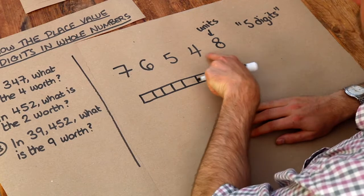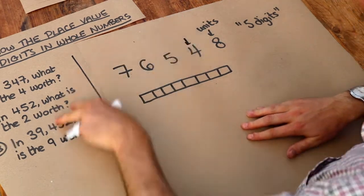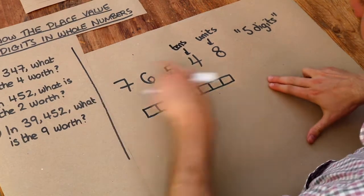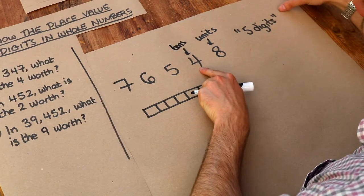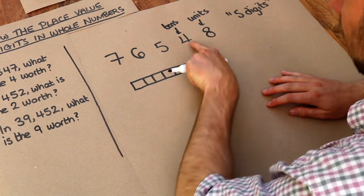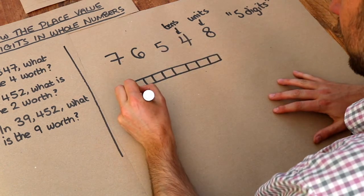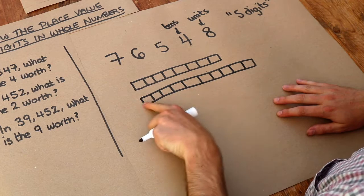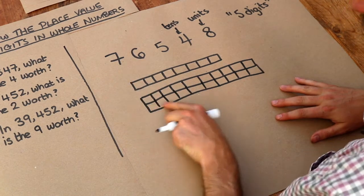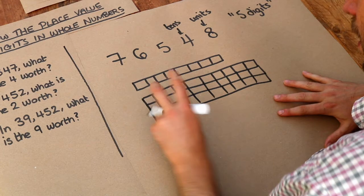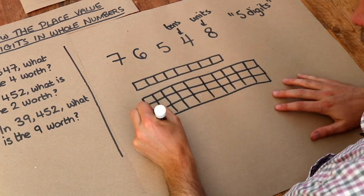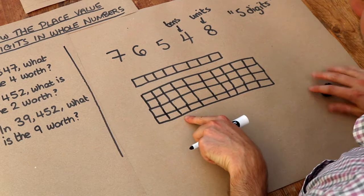The next digit to the left is known as the tens digit, and that basically means that each one of these is worth ten. So if I was to draw that, I've got to draw four tens: here's one lot of ten, here's a second lot of ten, here's a third lot of ten, and finally, because we've got four tens, here's a fourth lot of ten.